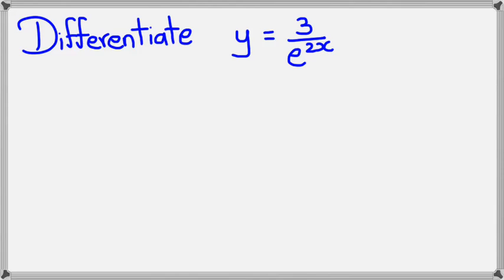So the first thing I want to do is write it with e^(2x) in the numerator. So I'm going to have it as 3e^(-2x). So once I have this, I can start differentiating it.